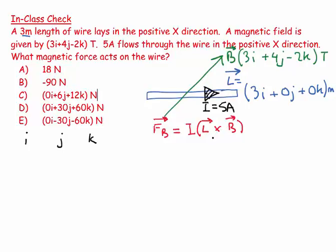And being in the wrong direction is the worst outcome, so let's do it right. So it's L cross B. So I'll put down my L, and my L of course is 3, 0, 0, and then my B is 3, 4, minus 2. There's my B.